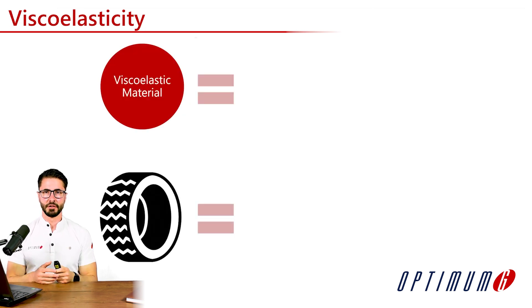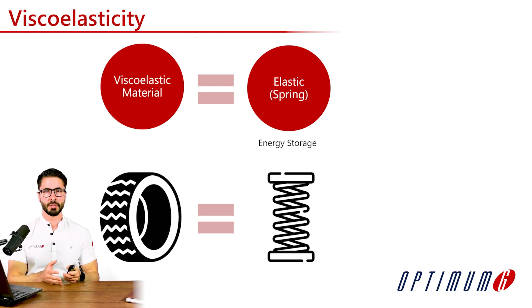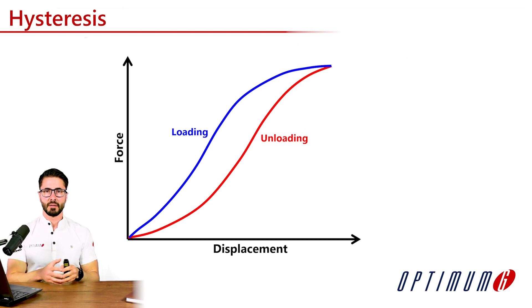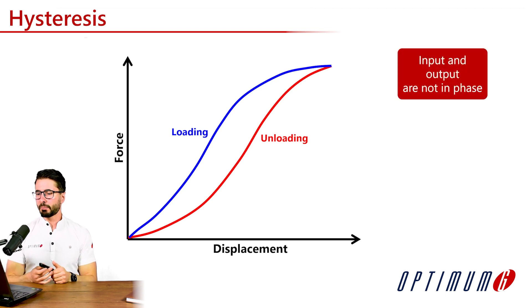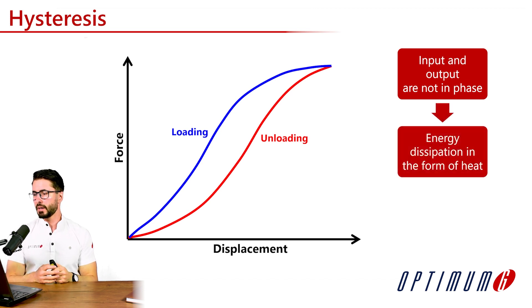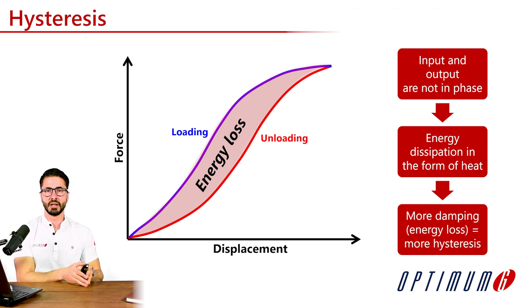What is a viscoelastic material? In this case, we're looking at the tire rubber. It is a combination of an elastic material — which can be thought of as a spring with its energy storage properties — and also a viscous material, such as a damper with its energy dissipation properties. Since we have these energy loss properties, it generates hysteresis in the material, as we can see in this plot. As we apply the force and release it, the profile of force versus displacement is not the same, because the input and output are not in phase. This creates energy dissipation in the form of heat, and therefore more damping or energy loss will also mean more hysteresis in the material.